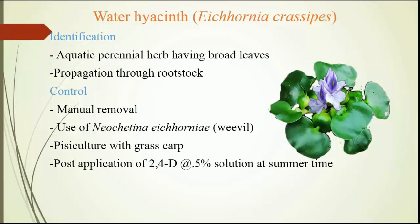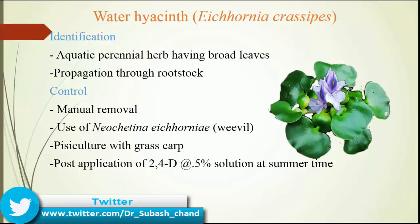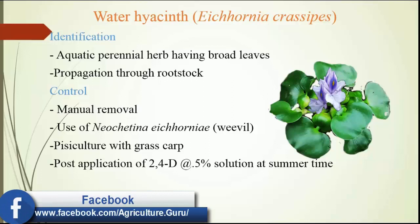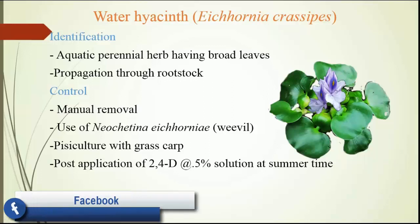Next weed is water hyacinth, also known as Eichhornia crassipes. Major identification: aquatic perennial herb having broad leaf, propagated through root stock. Control of water hyacinth is mainly manual removal. But in large scale, it is treated by post-emergence application of 2,4-D at the rate of 0.5% solution at summer time. In case of biological control, it is controlled by fish culture with grass carp.